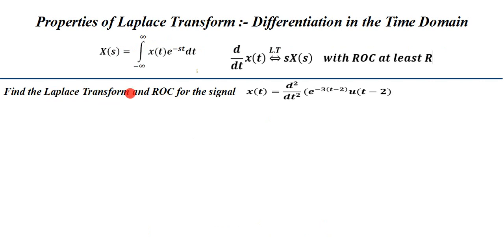The first question: find the Laplace transform and ROC for the signal x(t) = d²/dt² of [t²·e^(−3(t−2))·u(t−2)]. We need to find the second derivative, meaning we apply the Laplace transform property two times. If we closely observe this signal, we can see an abstract signal in standard form: e^(−3t)·u(t).